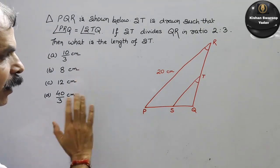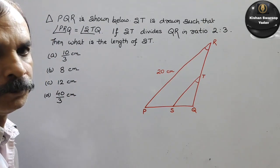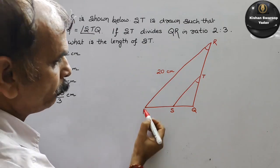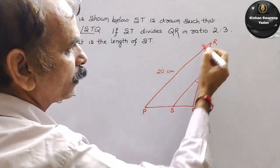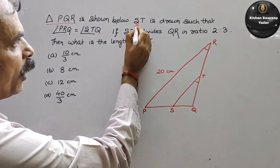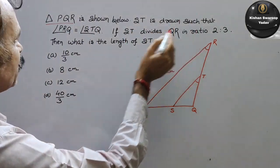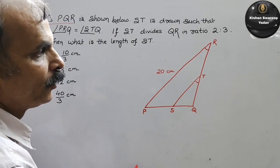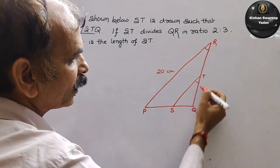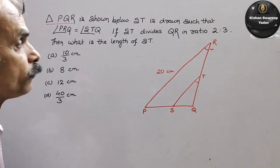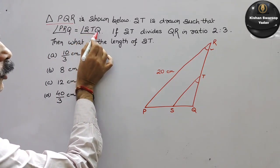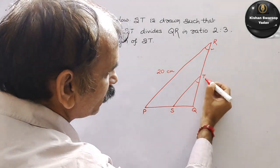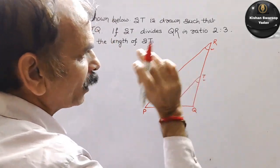Aapke 4 options hain. Pehle isko samjho — isne kya bola hai? Toh yeh hai aapka triangle PQR, bada wala triangle. Isne bola hai ST is drawn such that angle PRQ — R center mein hai — toh woh aapka angle PRQ, yaani yeh wala angle. Is equal to angle STQ — T center mein hai — toh STQ yeh wala angle. Yeh dono angle aapke same hain.